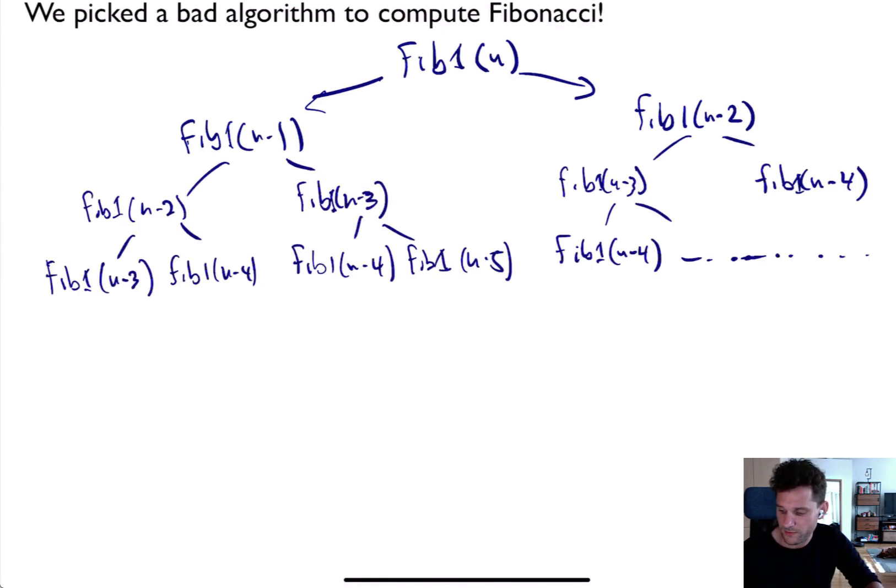So now notice that to compute Fib1(n), if you look down the tree of recursive calls that we had to do, you'll notice a lot of repetition. For example, look, Fib1(n-4), just how I've drawn it, there's 1, 2, 3, it's over here, 4, 5, and there's actually more calls as well.